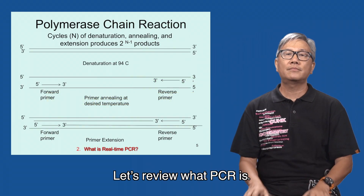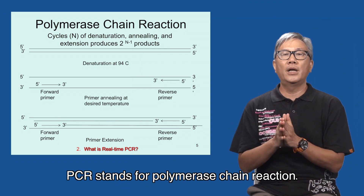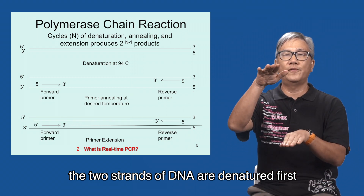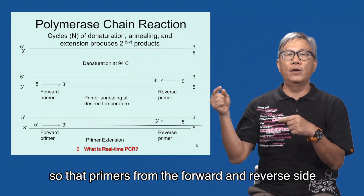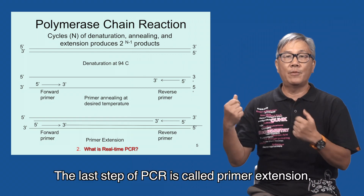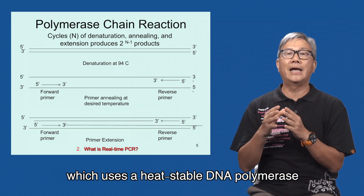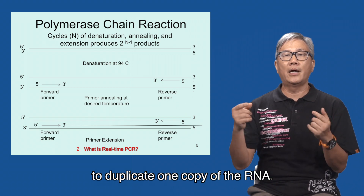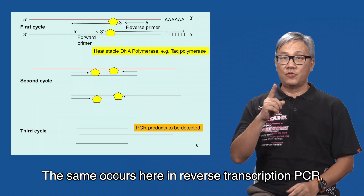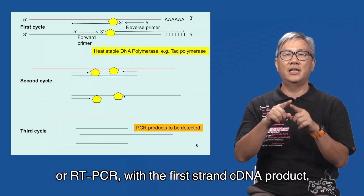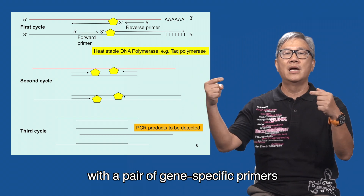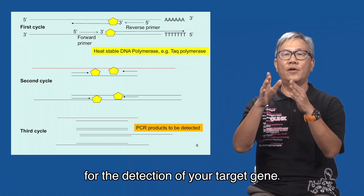Let's review what PCR is. PCR stands for polymerase chain reaction. In normal PCR, the two strands of DNA are denatured first so that primers from the forward and reverse side can anneal at a desired annealing temperature. The last step of PCR is called primer extension, which uses a heat-stable DNA polymerase to duplicate one copy of the DNA. The same occurs in reverse transcription PCR, or RT-PCR, with the first-strand cDNA product, in which Taq polymerase with a pair of gene-specific primers can amplify the PCR products for the detection of your target gene.